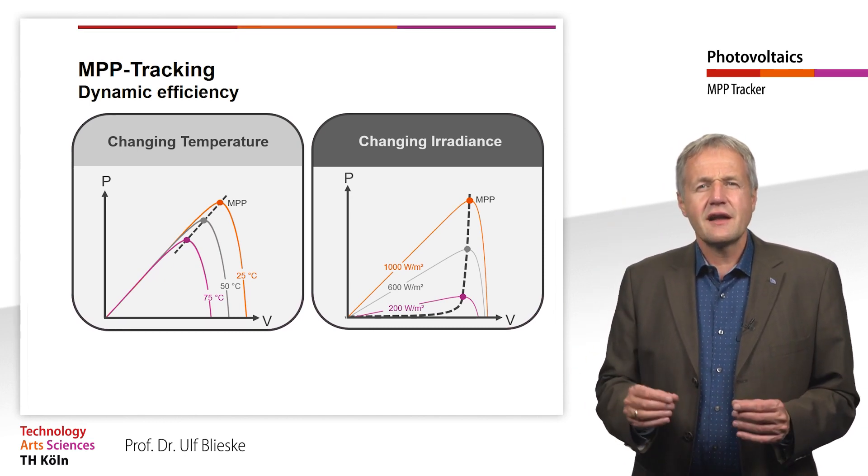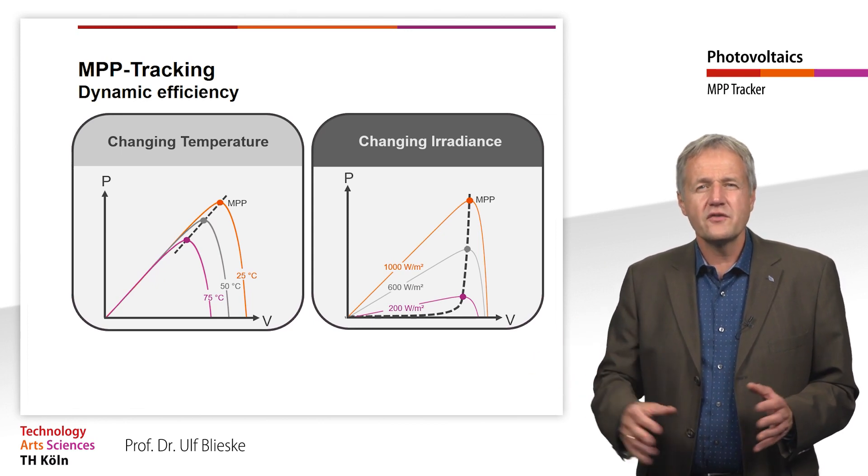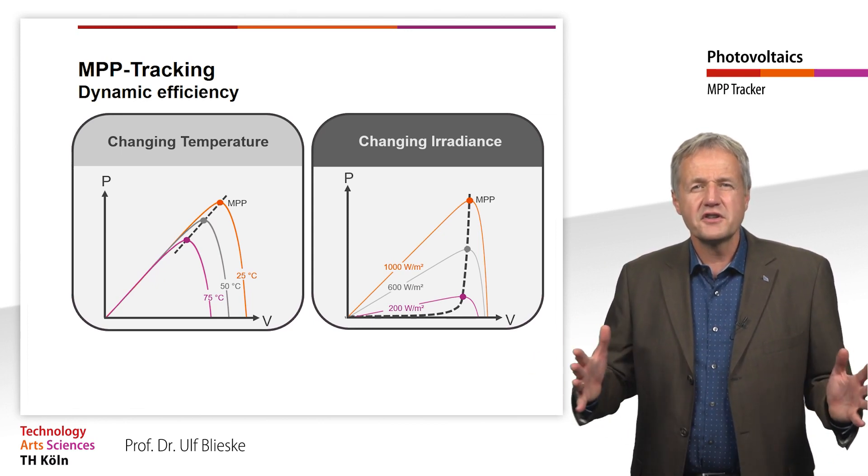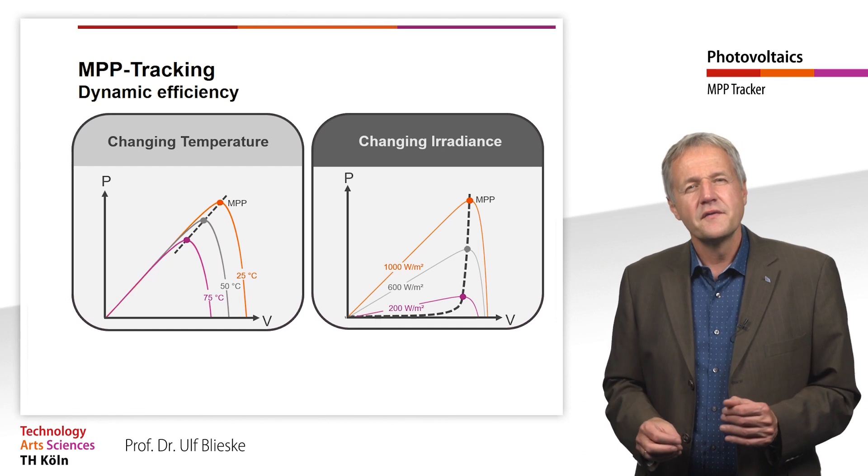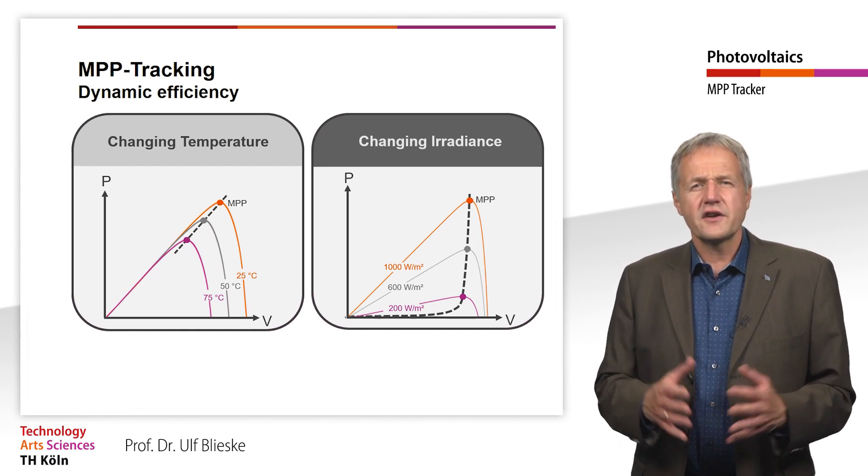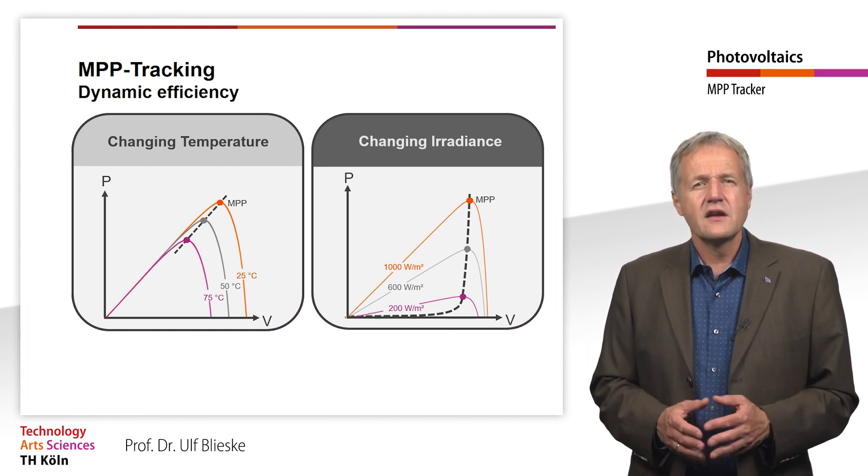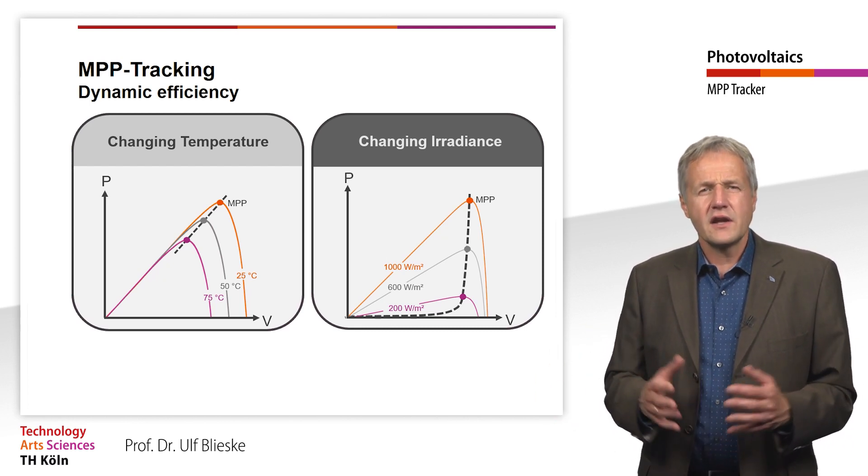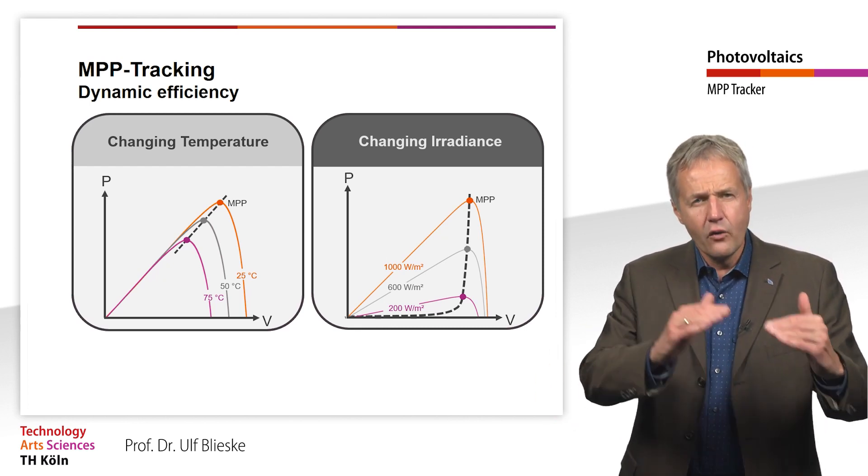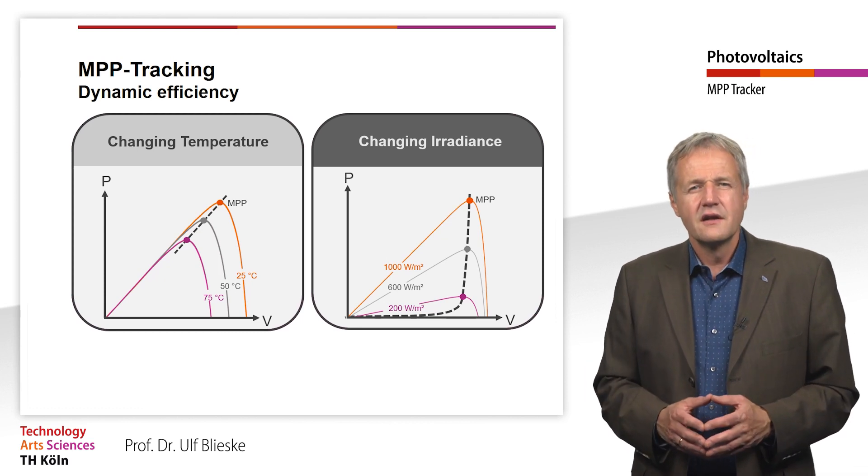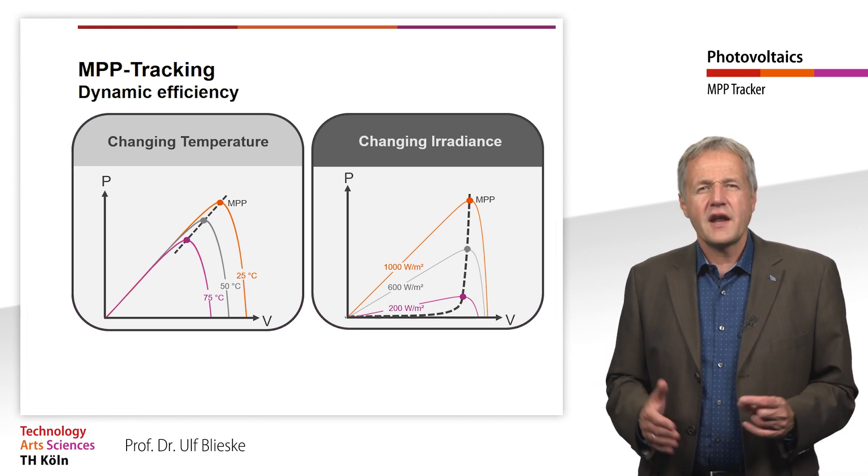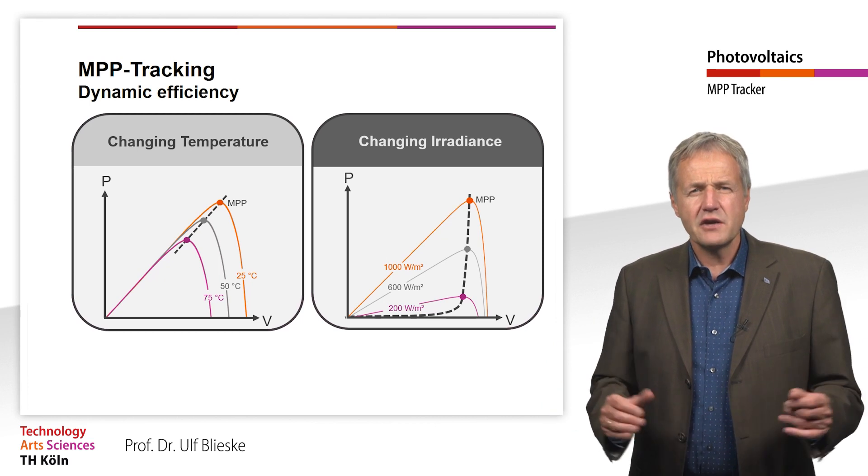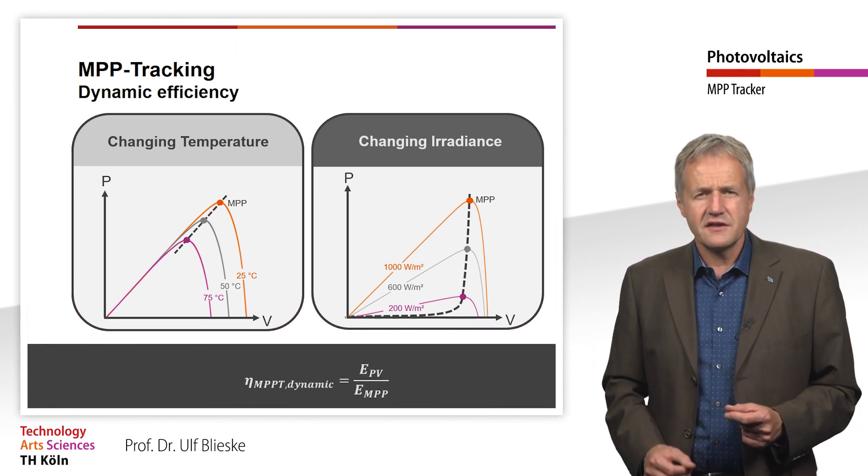The situation changes if we look at the range below 300 W per square meter. If the irradiation suddenly jumps from 200 to 1000 W per square meter, the MPP voltage changes significantly. This would be the case for example in a sunny day with passing clouds. But also in the morning and evening hours the irradiation changes in a low radiation range. To describe the behavior of an MPP tracker under changing irradiation, the dynamic efficiency is used.